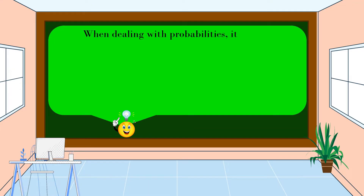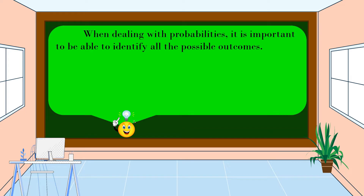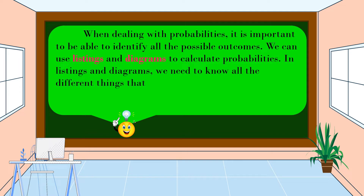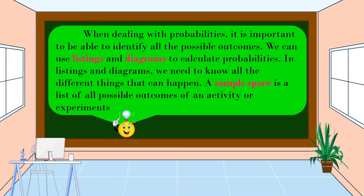When dealing with probabilities, it is important to be able to identify all the possible outcomes. We can use Listings and Diagrams to calculate probabilities. In Listings and Diagrams, we need to know all the different things that can happen. A sample space is a list of all possible outcomes of an activity or experiment.